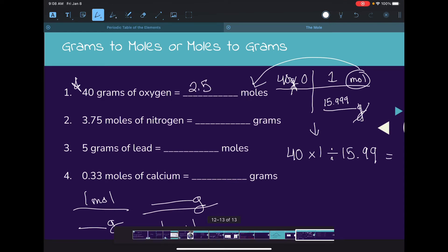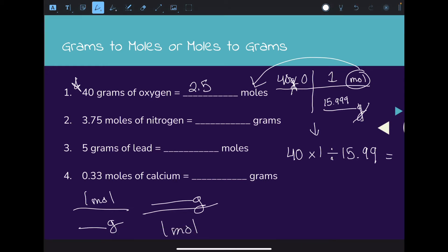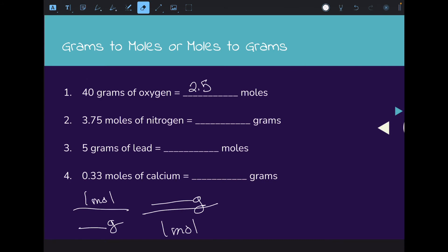I'm not rounding with sig figs here, so make sure you're paying attention to that if you need to. Let's try the next one. This one is a little different - we're starting with moles to get into grams. We have 3.75 moles of nitrogen and need to convert to grams. In this case, moles goes on the bottom so we can cancel it out.